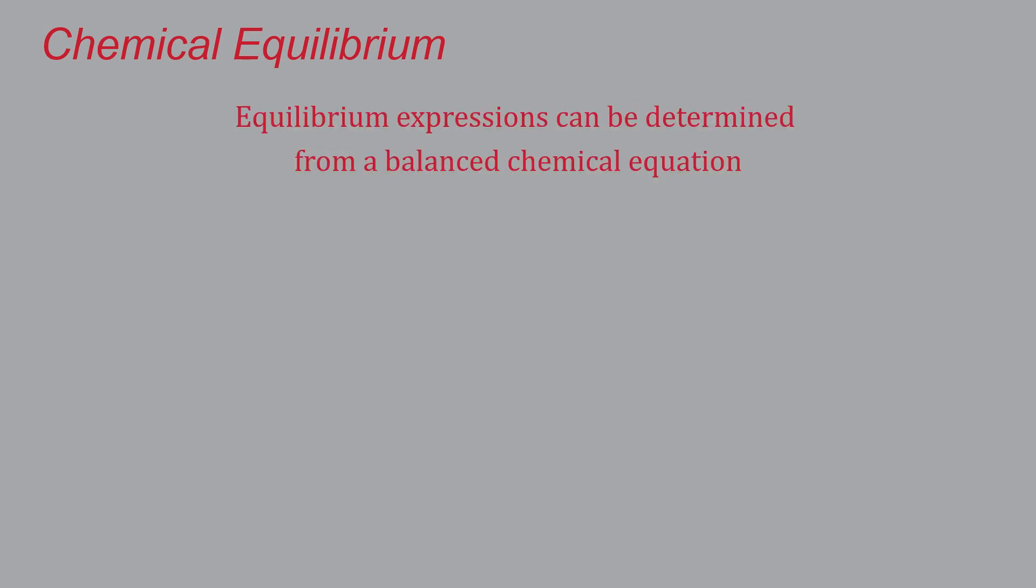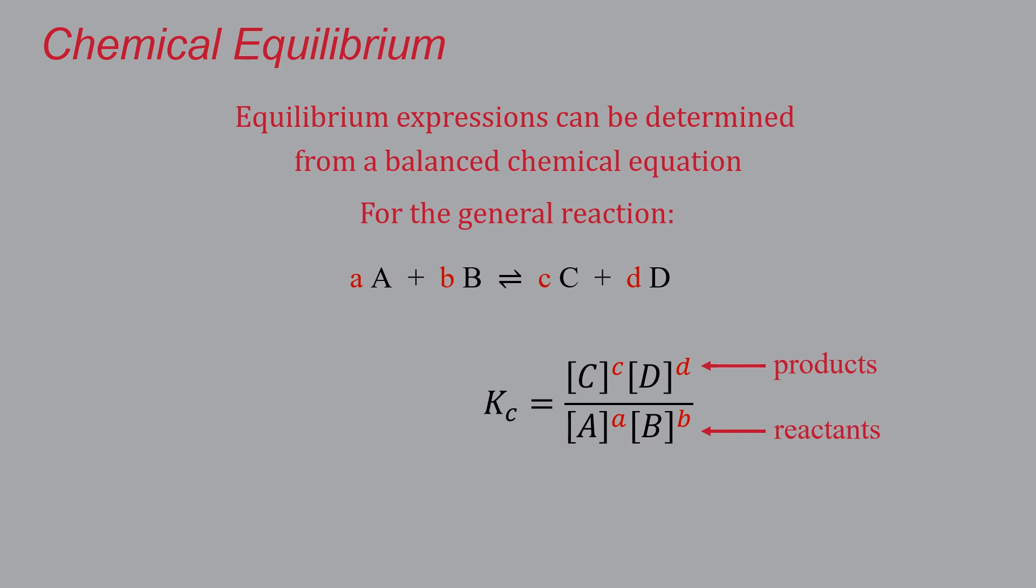Now it's a little beyond the scope of this class, but the idea is that the equilibrium expression can be determined from a balanced chemical equation just like we did before. The reason why that last example worked out so cleanly is we made an assumption about first-order kinetics. If you decide to be a chemistry major and take physical chemistry, you will learn exactly why. For some general reaction—little a A plus little b B gives us little c C and little d D—the equilibrium constant expression would be equal to the concentrations of the products raised to the power of their coefficient divided by the concentration of the reactants raised to their coefficient.